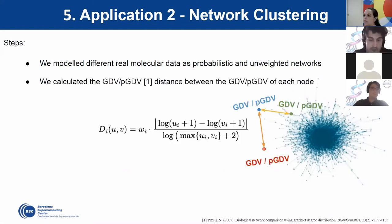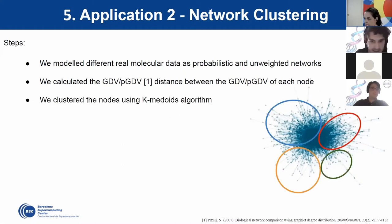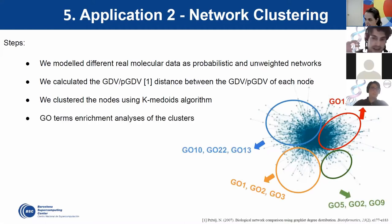We calculated the graphlet degree vector using normal graphlets or probabilistic graphlets, and calculated the node distances using this vector. We then applied a K-means algorithm and checked if the resulting clusters had any biological meaning by applying Gene Ontology term enrichment analysis on the clusters.